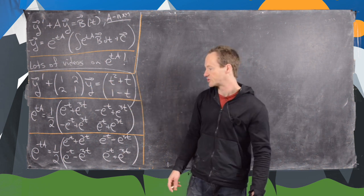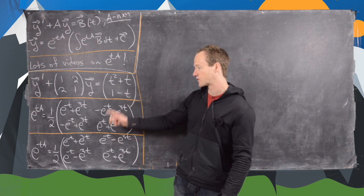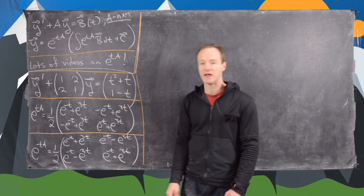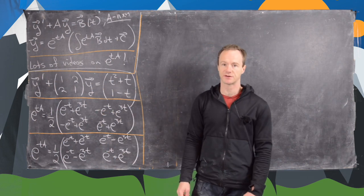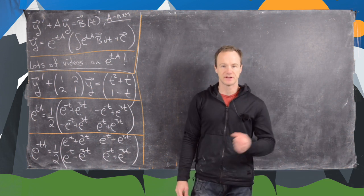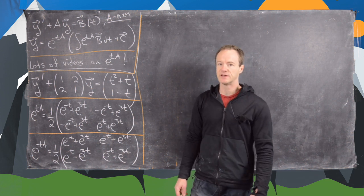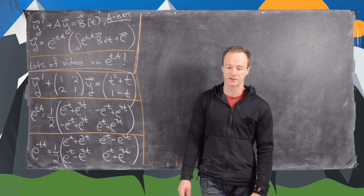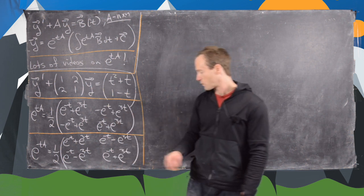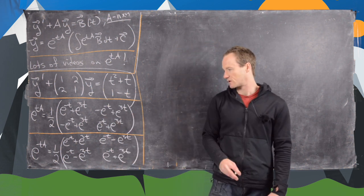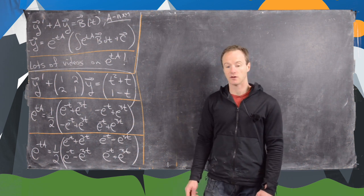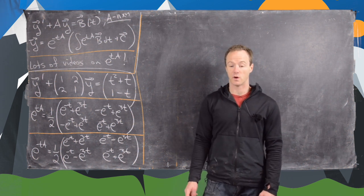I did the calculation off screen — here is the matrix exponential and its inverse. You can check that again using the methods from the previous videos. These are both diagonalizable so it's not that hard. I won't read off all the entries but you can pause the video and look at that.